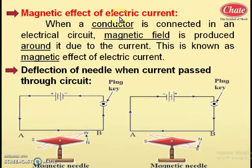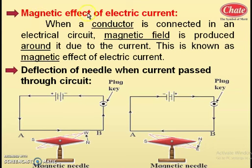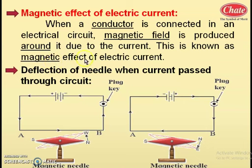Let us study the next effect of electric current: the magnetic effect of electric current. In the introductory part, we have studied the definition of magnetic effect of electric current. When a conductor is connected in an electric circuit, a magnetic field is produced around it due to the current. This is known as the magnetic effect of electric current. Earlier we studied the heating effect; now we are studying the magnetic effect.